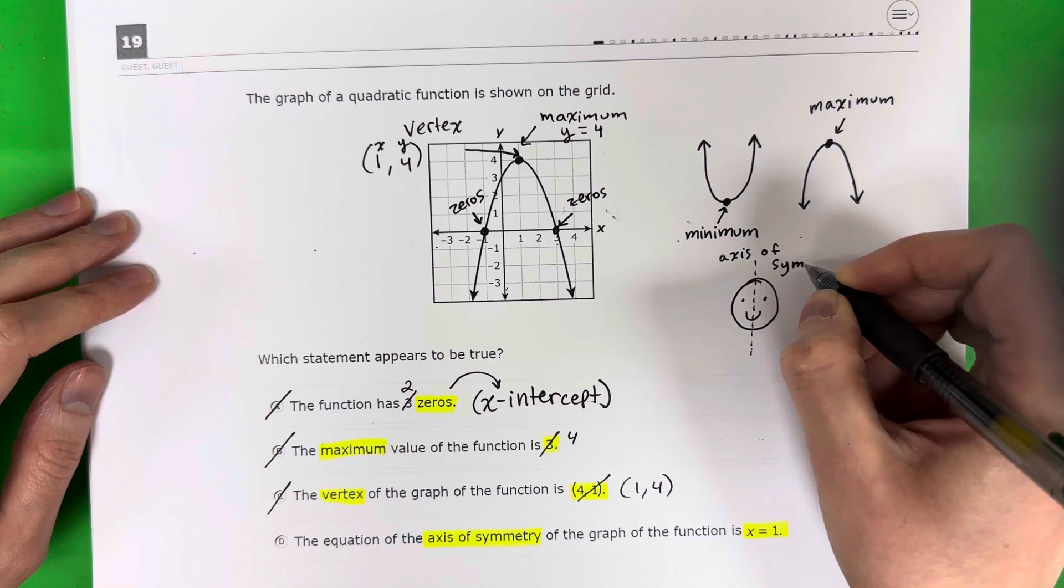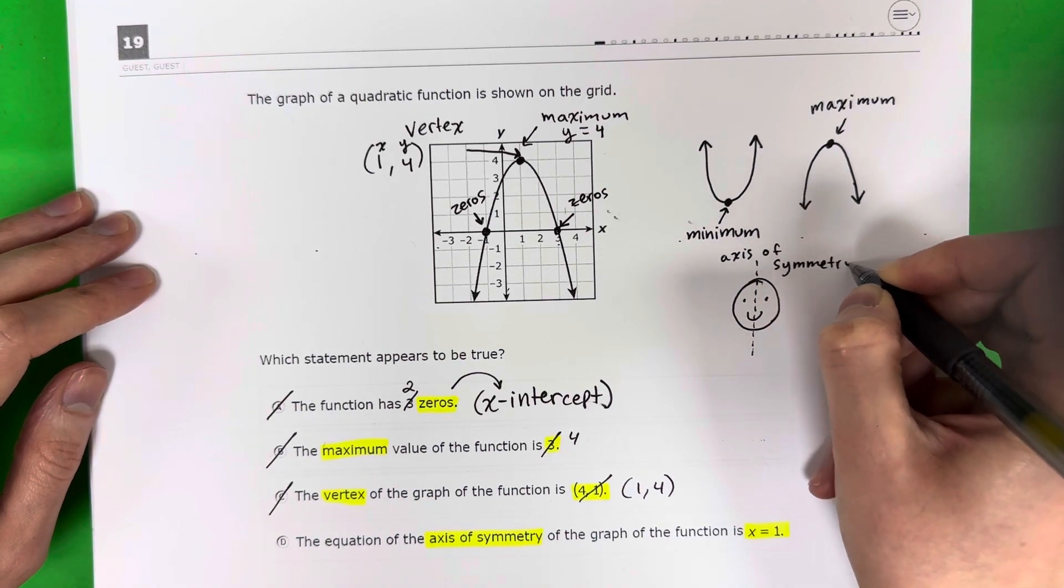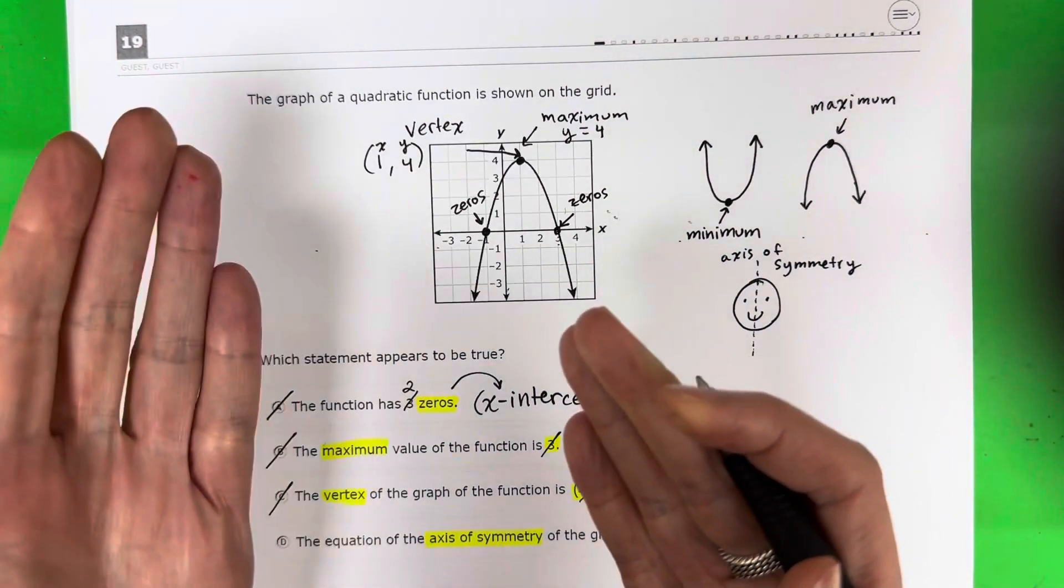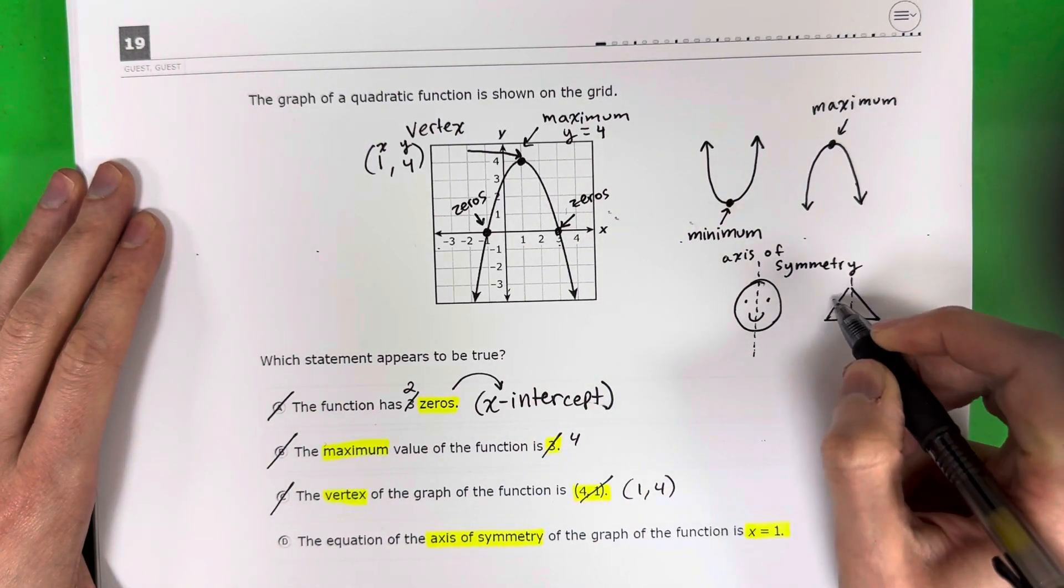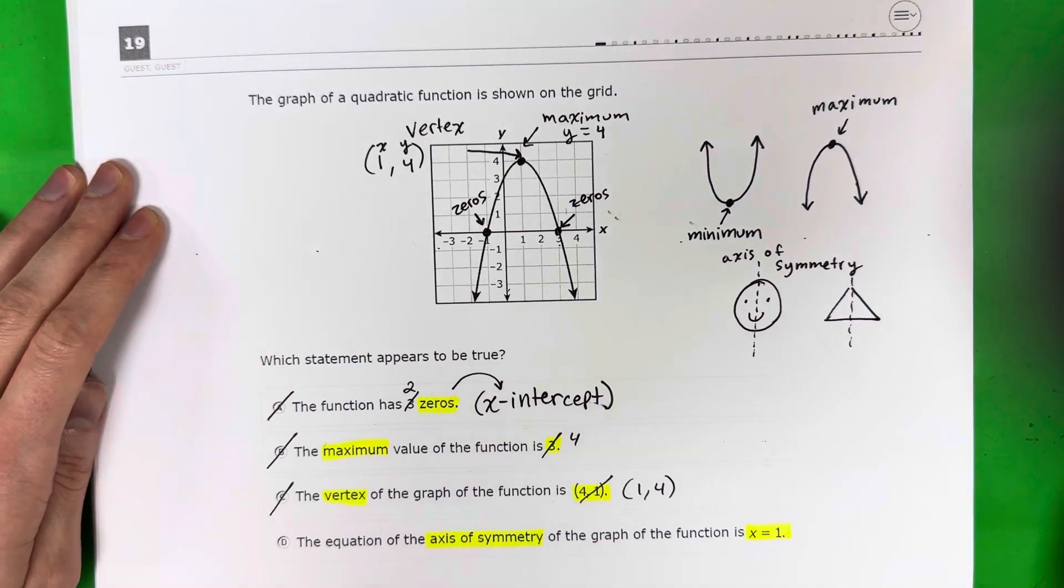Okay, so symmetry means two sides have the same on each side. So another one would be like, look at this triangle. If I do the line, the left side is the same as the right side, right?